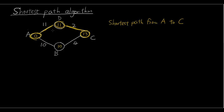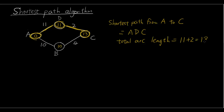So our shortest path from A to C would be ADC, and the total arc length is 11 plus 2, which is 13. So it's pretty easy when you have a simple network like that one.